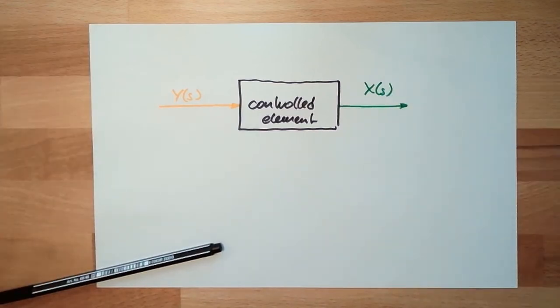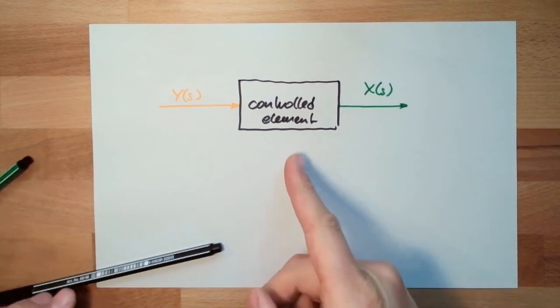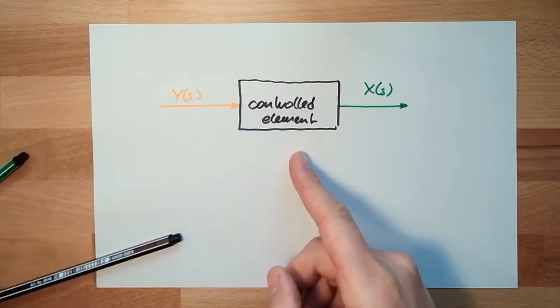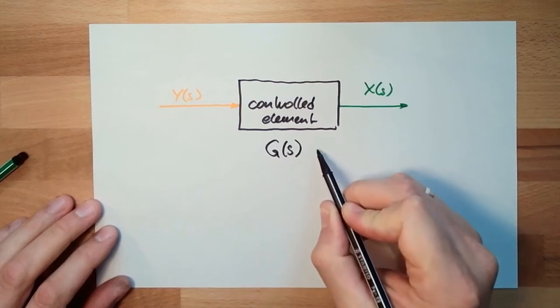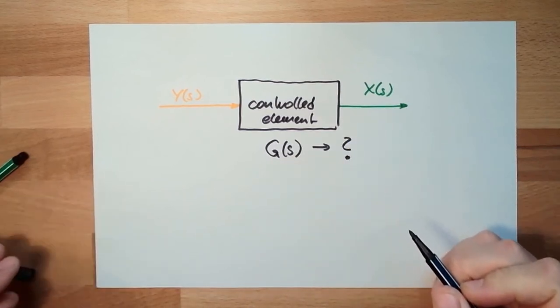What we are interested in is this transfer function. So here we do have some transfer function, usually G, and this we don't know.